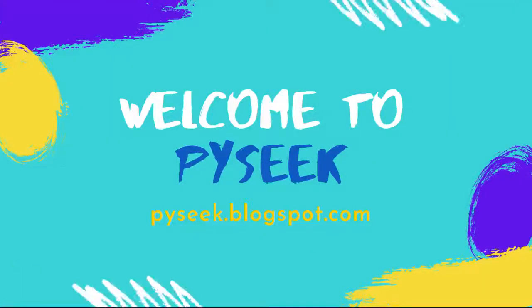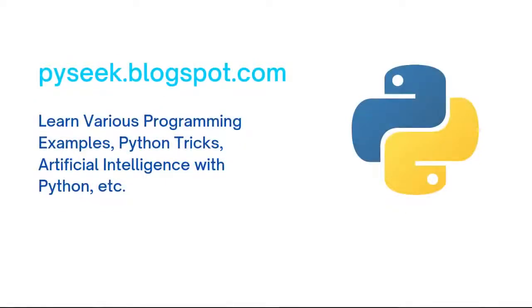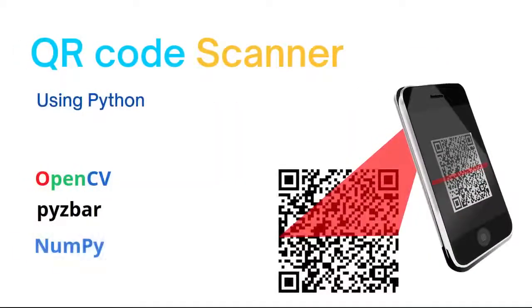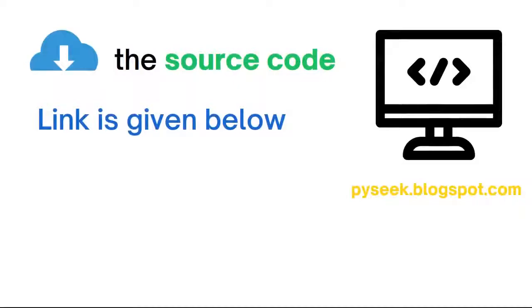Hello guys, this is Subankar here and you are watching Pisces, where you can learn various programming examples, Python tricks, artificial intelligence with Python and so on. In this video, you will learn to make your own QR code scanner using the Python OpenCV library. Get the full source code and more information about this application from my website — the link is given below. Without wasting any time, let's move on to the main topic.